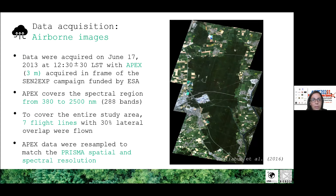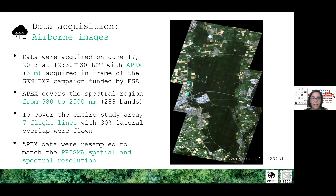The APEX sensor was used in 2013 in the framework of a SEN2Flex campaign funded by ESA. Covering the visible, near-infrared, and shortwave infrared spectral range, we covered the whole study area in seven flight lines. For this study, APEX data were resampled both spatially and spectrally to PRISMA resolutions, to understand the potential of PRISMA data to map plant functional traits in forests and to provide information about functional diversity.